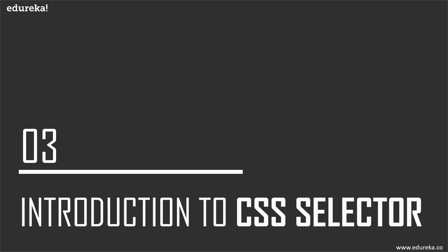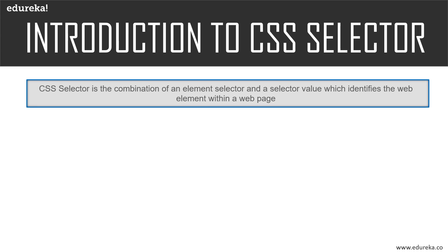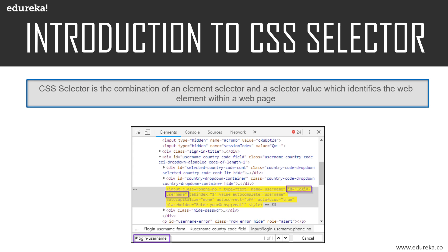Now let's move on to our key point: the CSS selector. CSS — Cascading Style Sheets — is a style sheet language used to describe the presentation of a document written in a markup language like HTML. We locate a web element using the corresponding HTML code. This method is very fast compared to XPath, one of the most popularly used element locators. The reason CSS selector has more importance is that it is very simple — it uses certain symbols for locating elements on the web page.